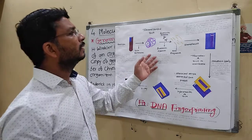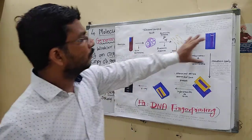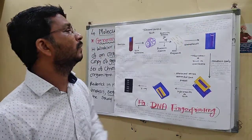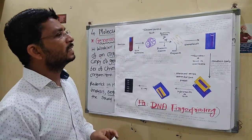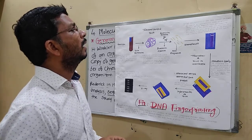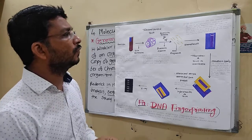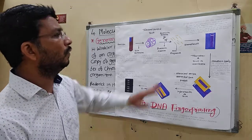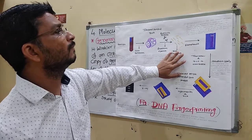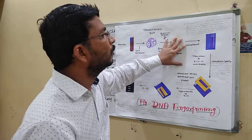Next is gel electrophoresis. The DNA samples are loaded onto agarose gel. Under electric influence, the DNA fragments, which are negatively charged, move to the positive pole. The movement of these fragments separates them by size. The double-stranded DNA is then split into single-stranded DNA by alkaline treatment.